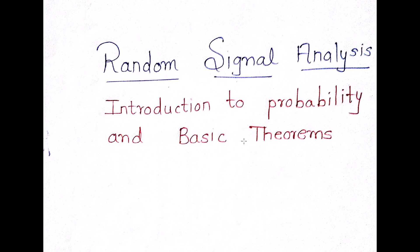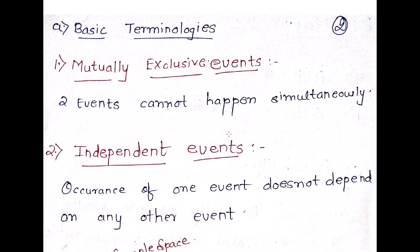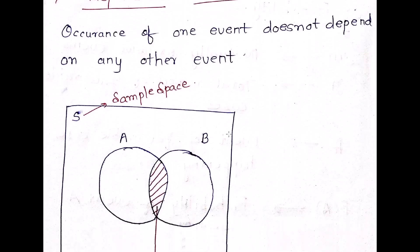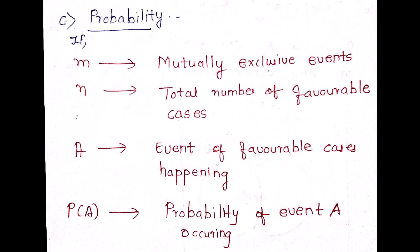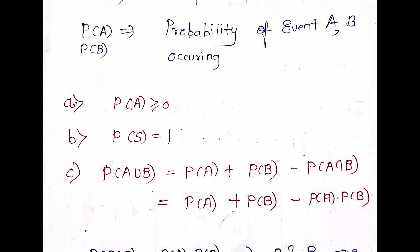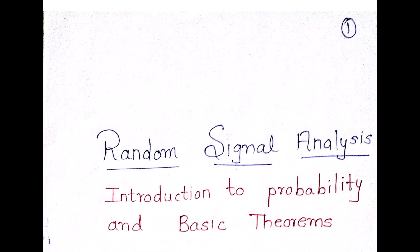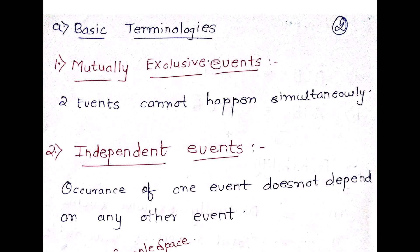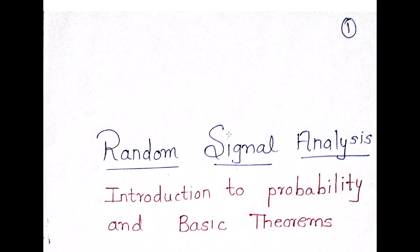Let's begin with Random Signal Analysis or Probability. Today's video is going to be short, covering the basics: Mutually Exclusive Events, Independent Events, De Morgan's Law, what Probability actually means, and certain properties of Probability. This is a basic video, but please listen carefully because all these terminologies will be used frequently in future video lectures, and without understanding them, it will be difficult to apply them in numericals and real-life applications.